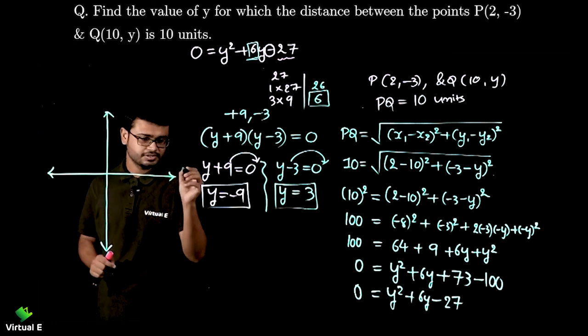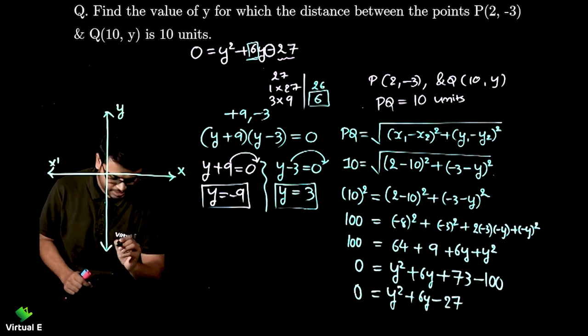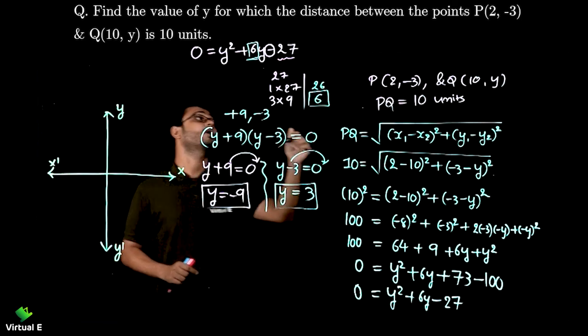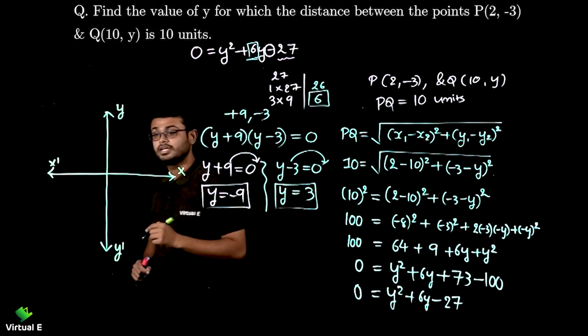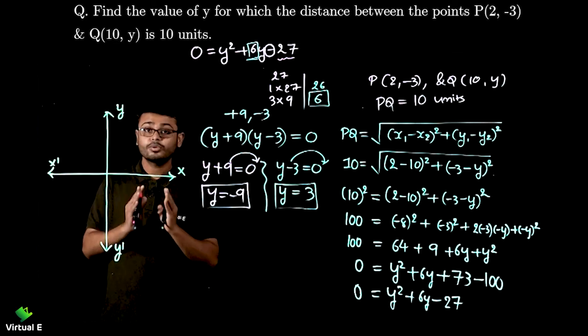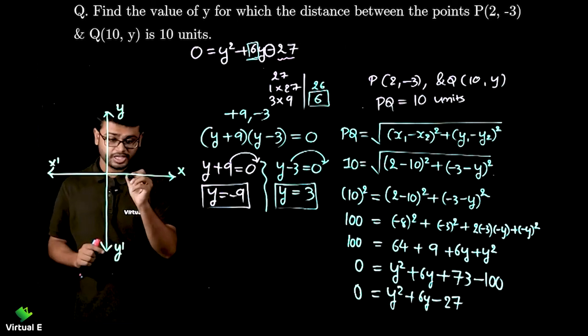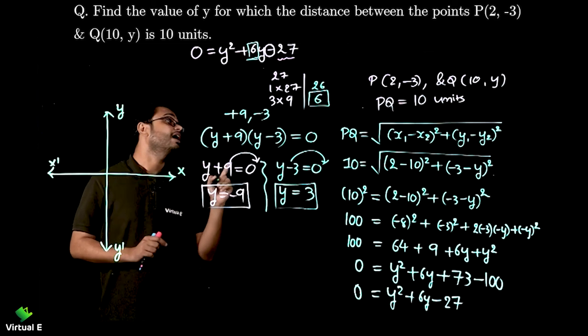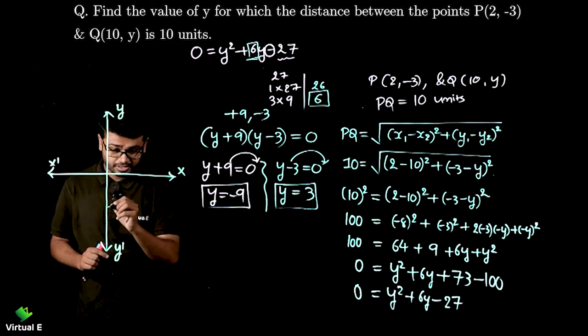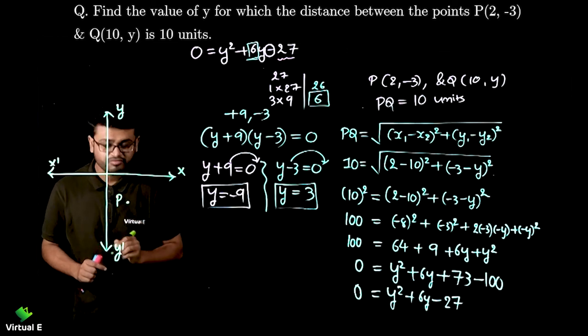I have point (2, -3). Let's first of all label. So x, x', y and y'. I want to plot point (2, -3). So 2, I am just estimating. Remember I am estimating. I am not going to draw the correct value. So this is the position of point P.